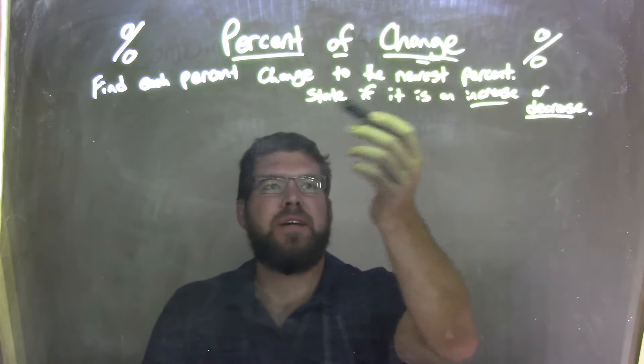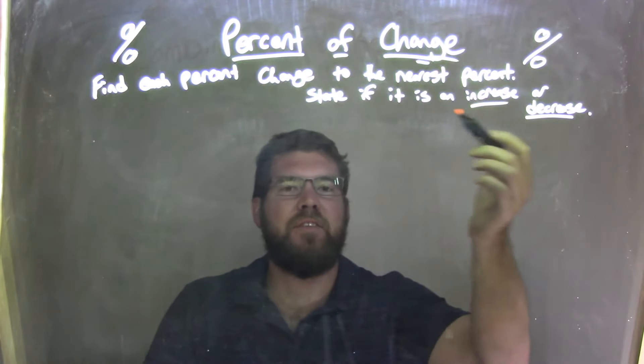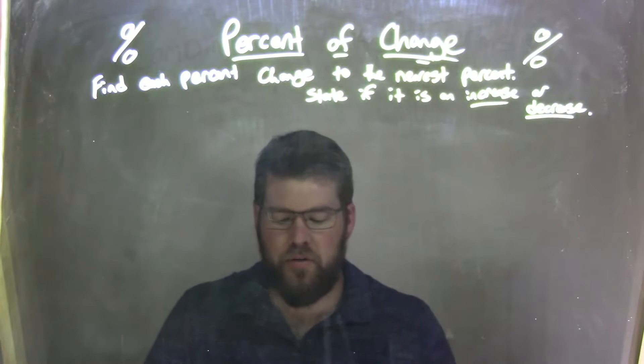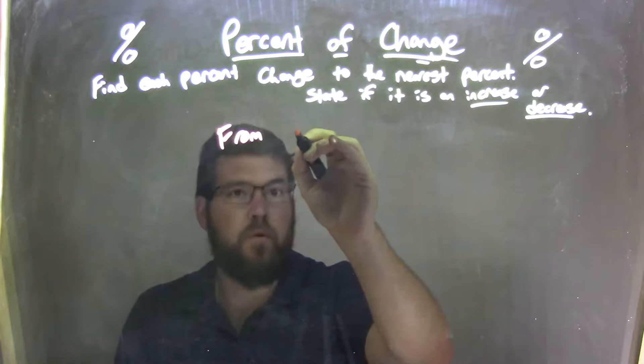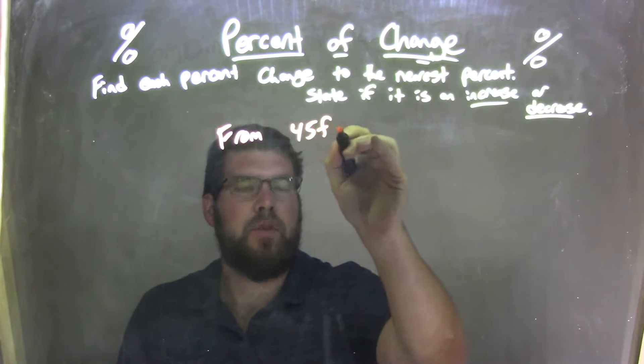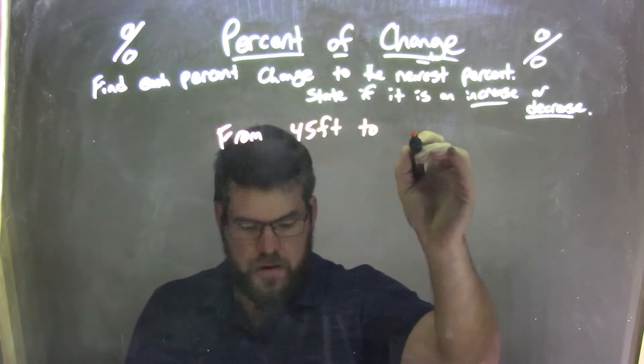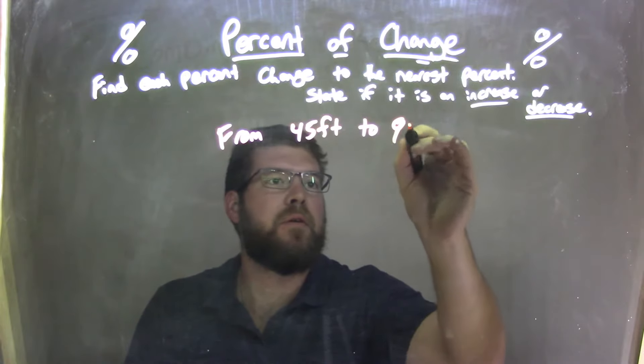I'm going to find each percent change to the nearest percent and state if it's an increase or decrease. So if I was given this problem from 45 feet to 92 feet.